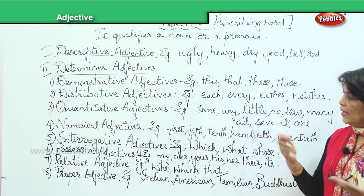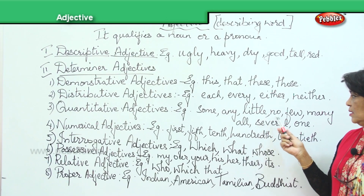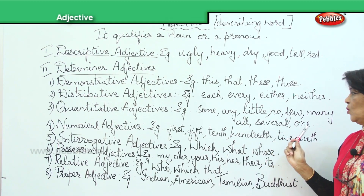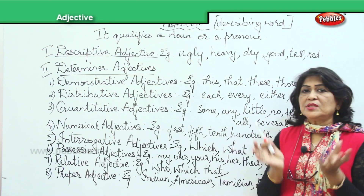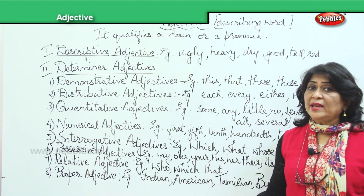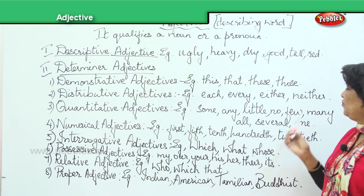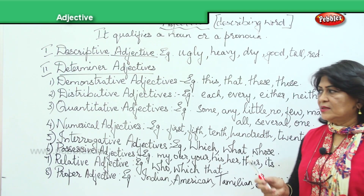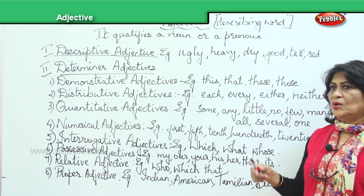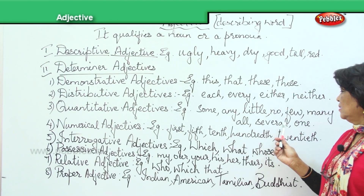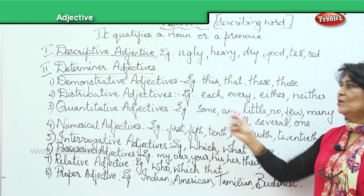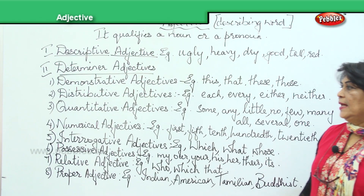Quantitative adjectives: some, any, little, no, few, many, all, several, one. This denotes a quantity of something — like 'She has some rice left,' 'He doesn't have any rice left,' 'I have a few coins,' 'He has many cars,' 'He has all that he needs,' 'He has only one car.' So it talks about quantity.